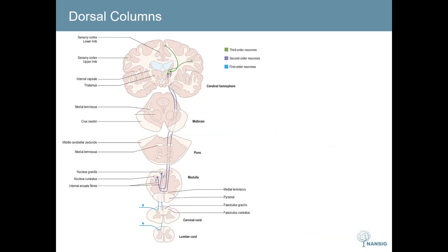Moving on to the dorsal columns. Here we see the same three neurons; however, they differ in where they decussate and where the synapses occur. The dorsal columns carry the sensation for vibration, discriminative touch, and proprioception. The signal enters the spinal cord through the dorsal root, then ascends all the way up to the medulla, where it synapses in the dorsal column nuclei. Those second order neurons then pass anteriorly in the medulla — this is the medial lemniscal decussation in the anterior medulla — and continue up in the contralateral medial lemniscus to the ventroposterolateral nucleus of the thalamus, where they synapse onto the third order neuron, which again passes through the internal capsule to the somatosensory cortex.